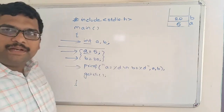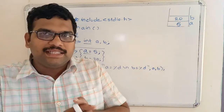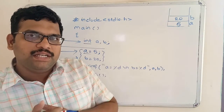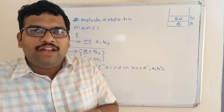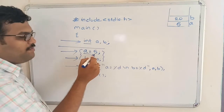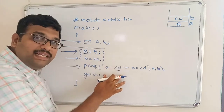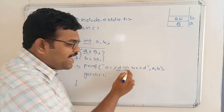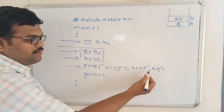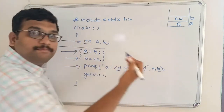The next statement is the printf statement. As seen in the previous session, printf is an output function — to display output on the screen we use printf. There are two variants: displaying only text, and displaying the value of a variable. To display a variable's value we specify the type specifier. Since 'a' and 'b' are integer data type, we use '%d'. The '\n' means display on a new line. The variable names must correspond to their type specifiers.